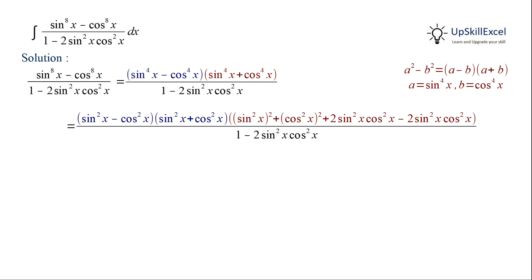For the second term, we will add 2 sin square x cos square x to make it a perfect square. As we have added a term, we will also have to subtract the term. So now here we have got 3 terms.